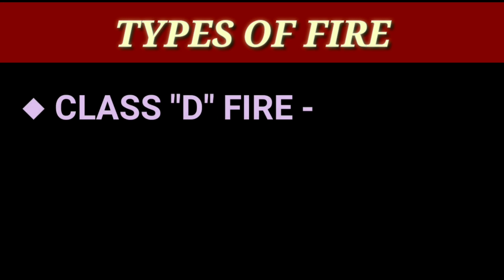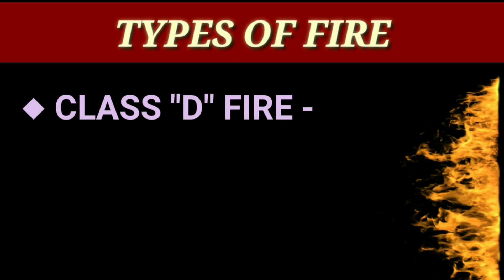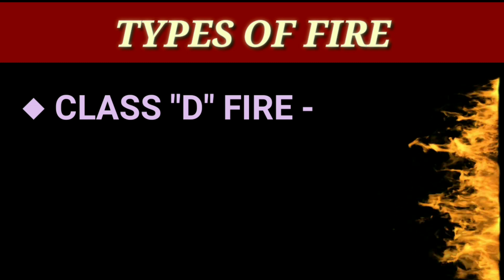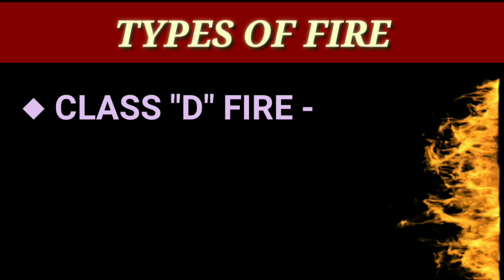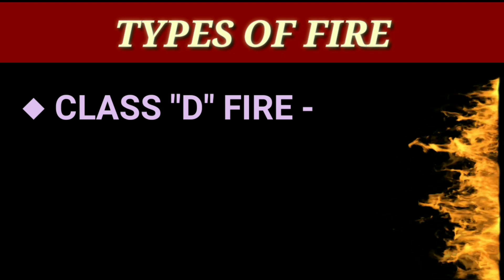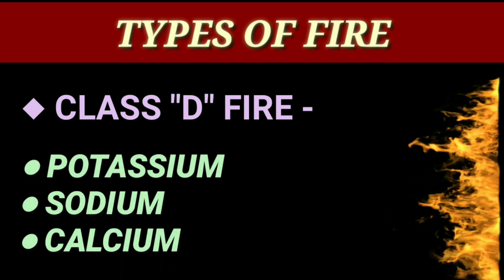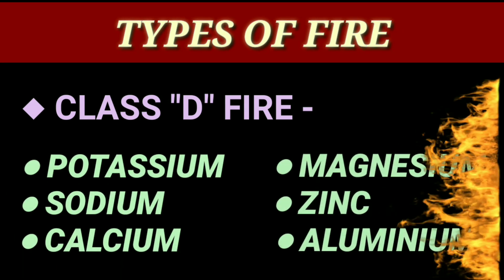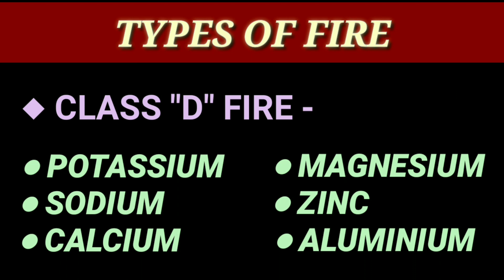Number four: Class D fire. This type of fire catches due to chemical substances or metallic substances. Fire caused due to combustible metals like potassium, sodium, calcium, magnesium, zinc and aluminum are included in Class D fire. Carbon dioxide gas-based fire extinguishers are used to control this type of fire.